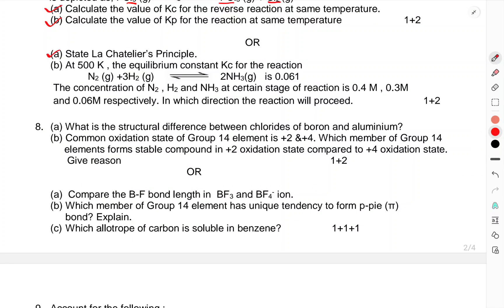State Le Chatelier's principle. At 500 K, the equilibrium constant Kc for the reaction: the concentration of N2, H2, NH3 at certain state of the reaction is 0.4M, 0.3M, and 0.6M respectively. In which direction will the reaction proceed?